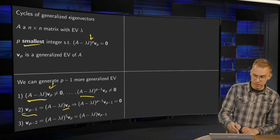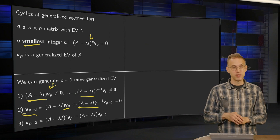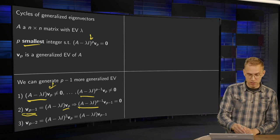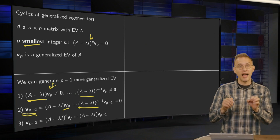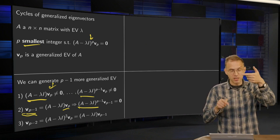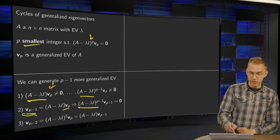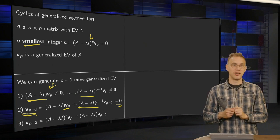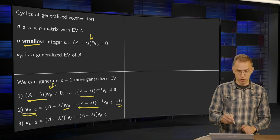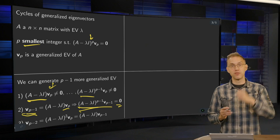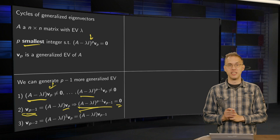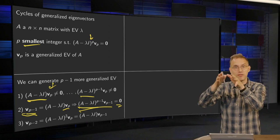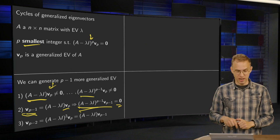If you have vp, you can compute vp−1 by computing (A − λI) times vp. You know that this is some non-zero vector. Moreover, if you multiply both sides by (A − λI)^(p−1), then you get (A − λI)^(p−1) times vp−1 on the left, and (A − λI)^p times vp on the right, which gives the zero vector. So vp−1 is non-zero and lies in the null space of (A − λI)^(p−1), meaning it is also a generalized eigenvector.